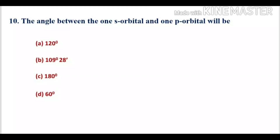The S orbital always undergoes sigma bonding and direct overlapping with the P orbital. So it is a linear interaction between the two orbitals, making the bond angle 180 degrees. Option C, 180 degrees, is the correct option.